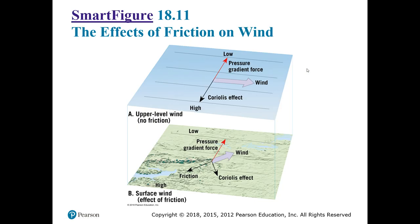At the surface, in addition to the pressure gradient force and the Coriolis effect, we also have friction from the ground, which further alters the direction of the wind.